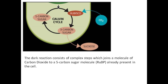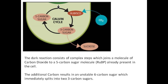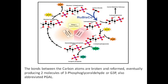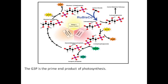The dark reaction consists of complex steps which join a molecule of carbon dioxide to a five-carbon sugar molecule, RuBP, already present in the cell. The additional carbon results in an unstable six-carbon sugar, which immediately splits into two three-carbon sugars. Rubisco is an important enzyme protein that acts as a catalyst for the first stage of the reaction. The bonds between carbon atoms are broken and reformed, eventually producing two molecules of 3-phosphoglyceraldehyde, or G3P, also abbreviated PGAL. G3P is the prime end product of photosynthesis.